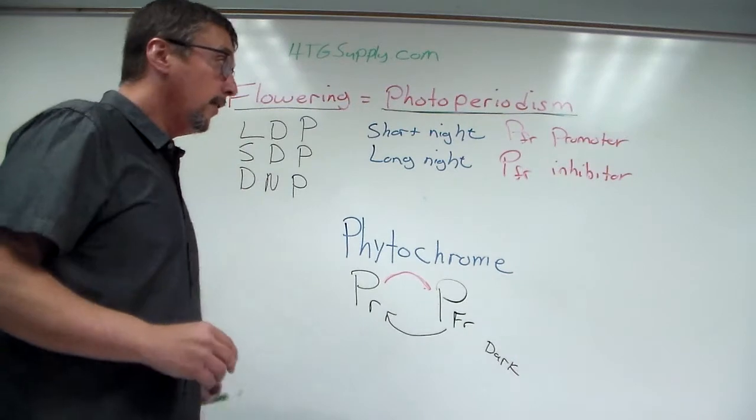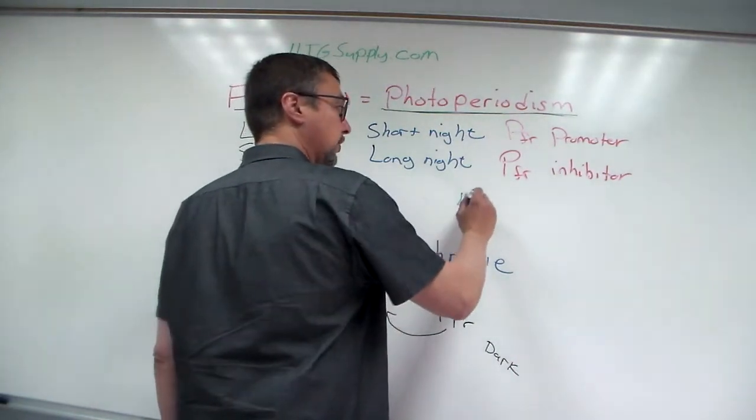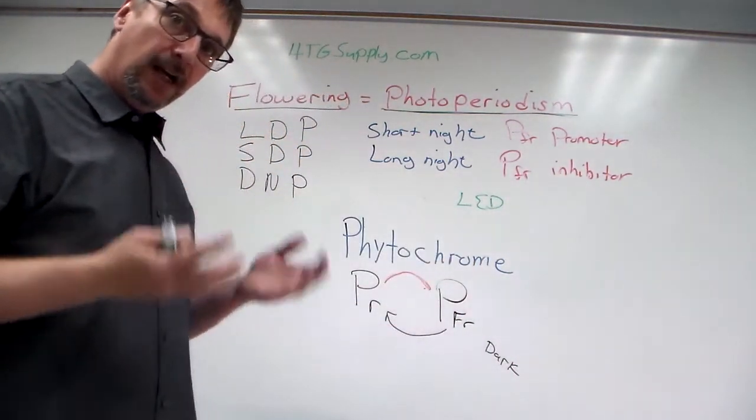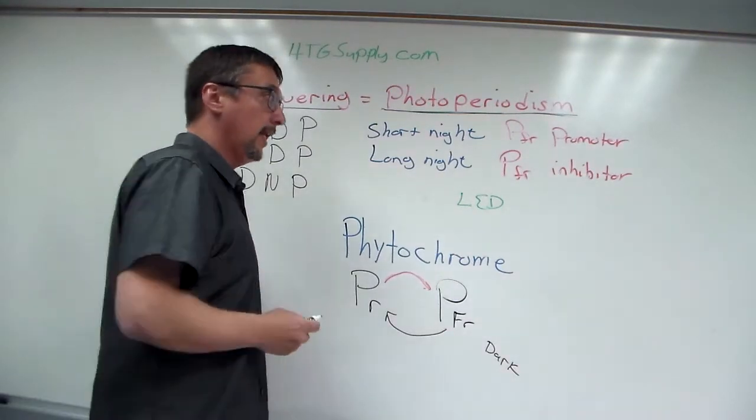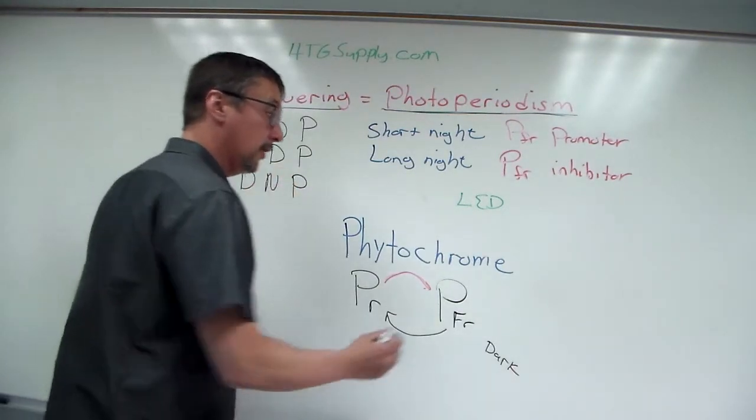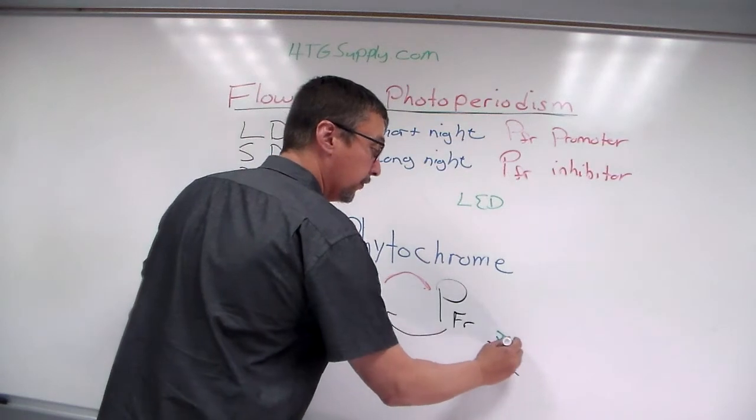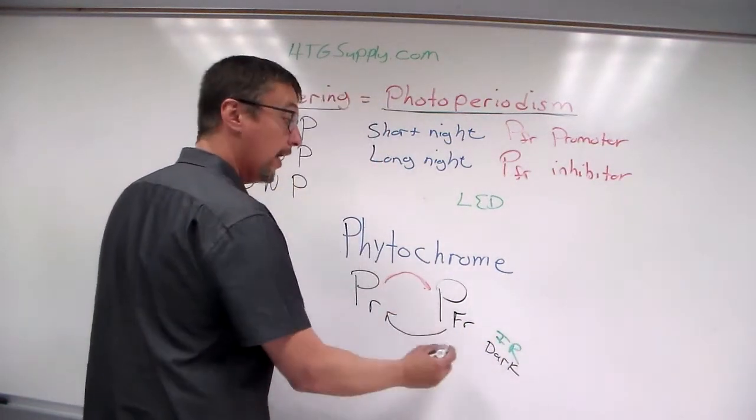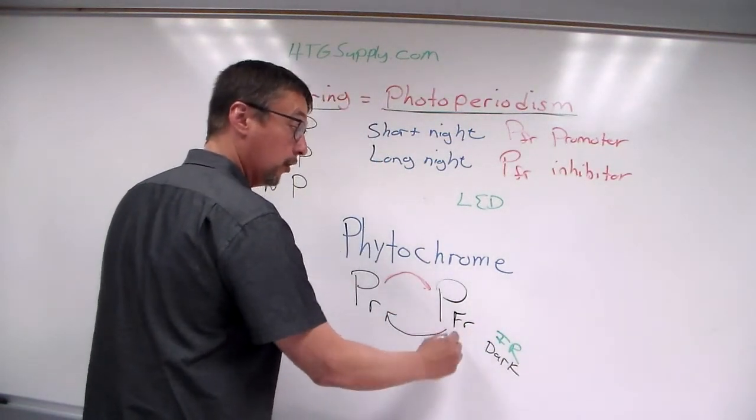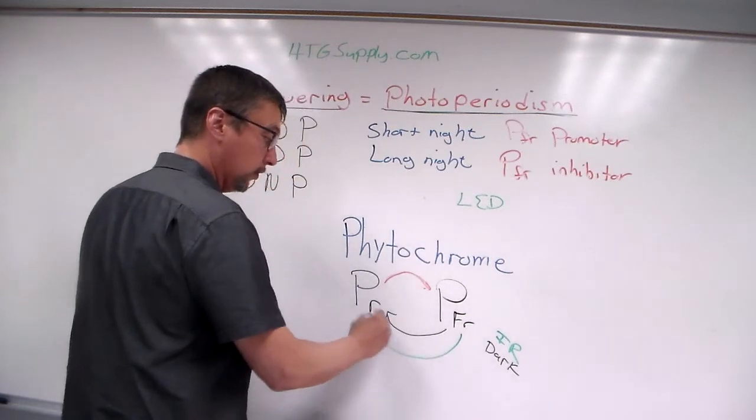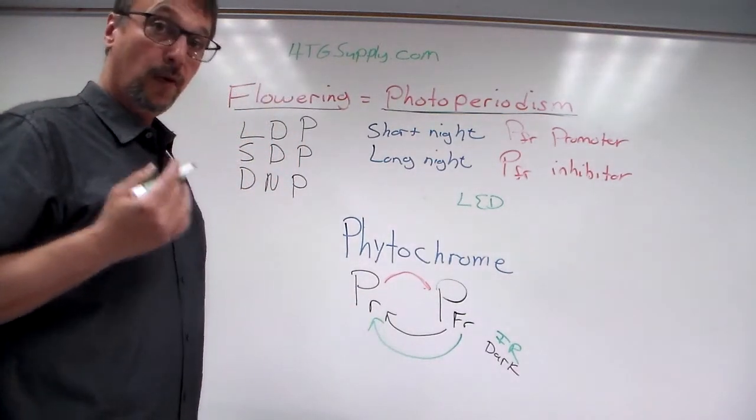Now what's interesting is because of the new technology, we can create LEDs that have a very specific wavelength of light energy. And it also turns out that when you give plants infrared light or far red light, that also causes phytochrome far red to be turned back into phytochrome red.